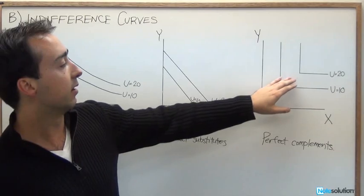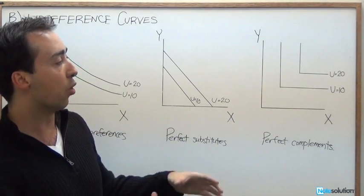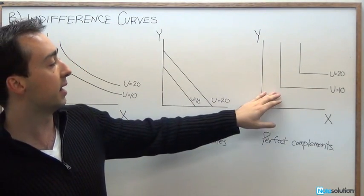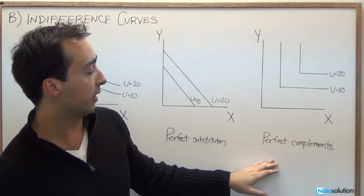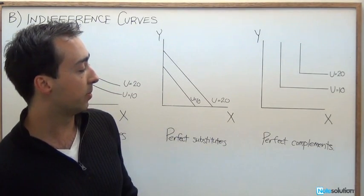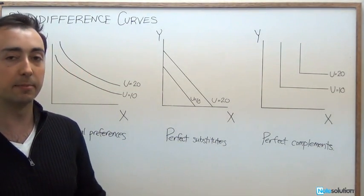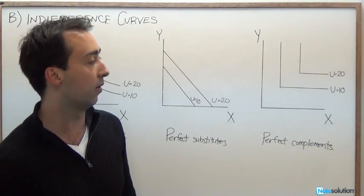The only way for us to get more value is to have more complete pairs. In this case, maybe we have two left shoes and two right shoes. Notice here that that's illustrating the perfect complements point, where you need to have some of both in order to have any increase in value at all.